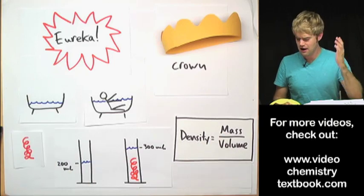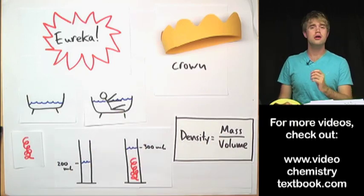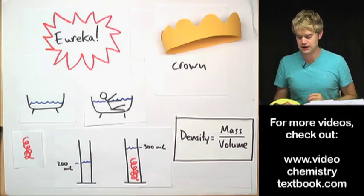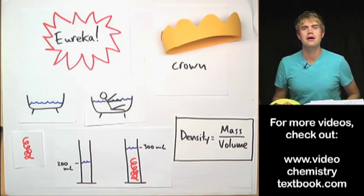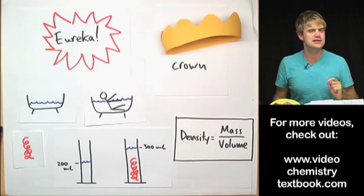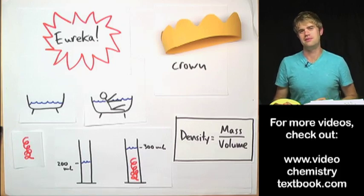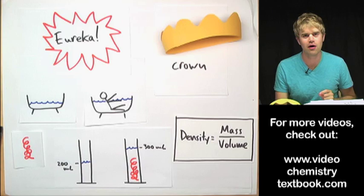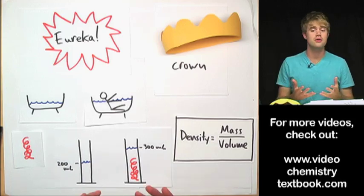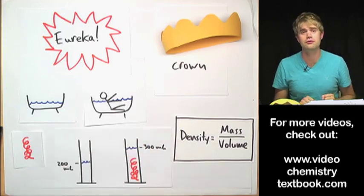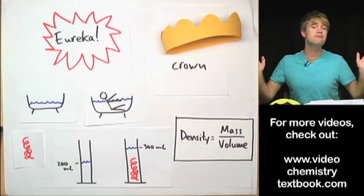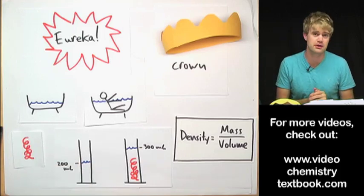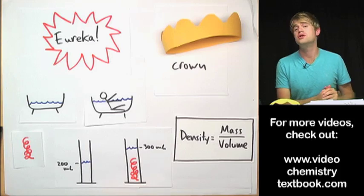So Archimedes finally figures out how to measure the volume of the crown. He goes back to the king, they weigh the crown, they determine its volume and they find that the density isn't right. The density is too low which means that the goldsmith took some of the gold for himself and mixed in another cheaper metal. I have no idea what actually happened to the goldsmith but my guess is the king was none too happy to find out that he'd been cheated.